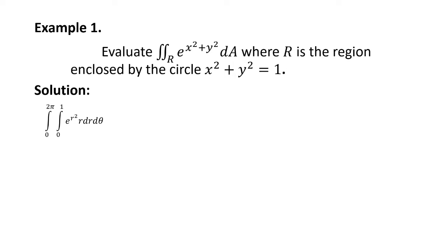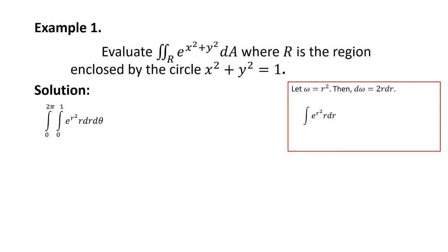So first, we are going to solve for the inner integral, which is the integral of e^(r²) · r dr. We let ω = r², so dω = 2r dr, giving us the integral of e^(r²) · r dr as the integral of e^ω. We'll have (1/2)e^ω + C, and changing ω back to r², we'll have (1/2)e^(r²) + C.